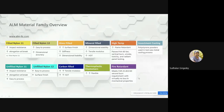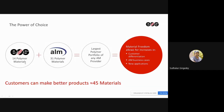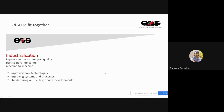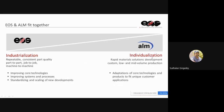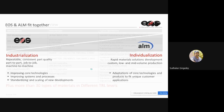ALM also develops flame-retardant materials for aerospace applications. Combined, EOS and ALM offer around 45 materials ready for direct use on their systems. While EOS focuses on industrialization-grade materials, ALM focuses on individualization — developing materials tailored to specific segments or applications.